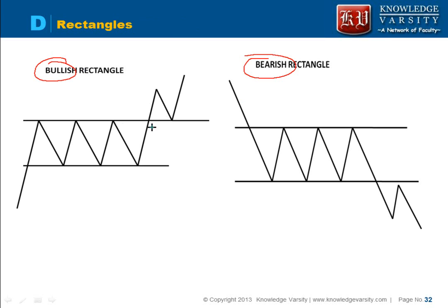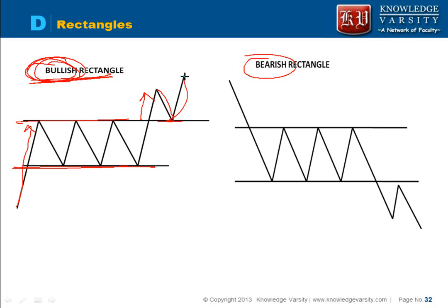Then you have the rectangle pattern, which can be bullish or bearish — both are continuation patterns. In a bullish rectangle, the price is increasing, then oscillates between a support and resistance line, and finally breaks out upward to continue the trend. In a bearish rectangle, the price decreases, then forms the support/resistance range, and finally it will decrease further.